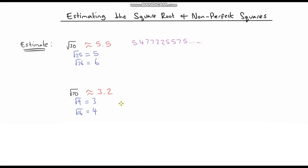Let's work it out on the calculator — square root of 10. My calculator tells me the answer is 3.16227766..., going on forever because it is an irrational number. My estimate was 3.2, which is quite close to the calculator display. And if I round the calculator value to one decimal place, I do indeed get 3.2. So that was a pretty good estimate.